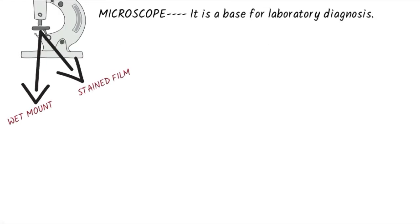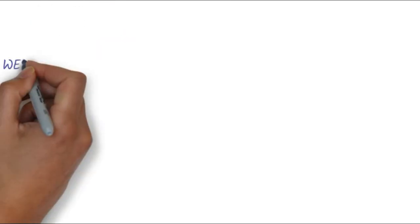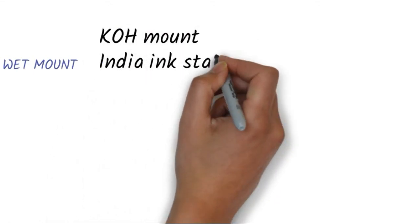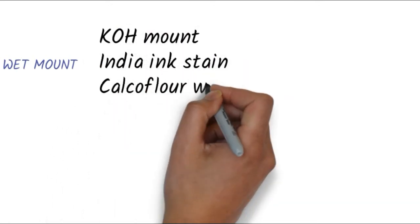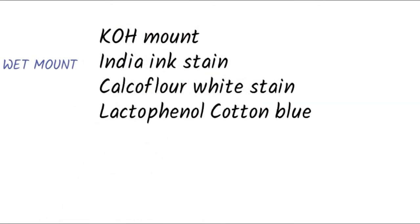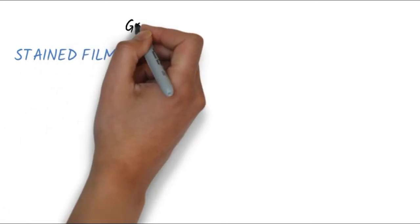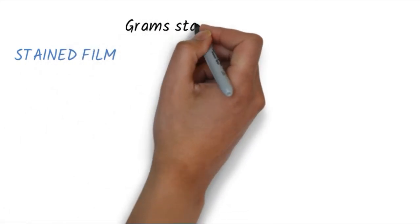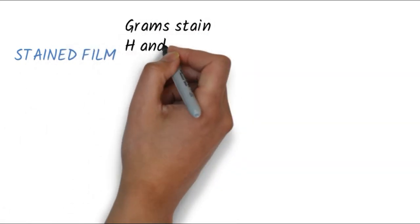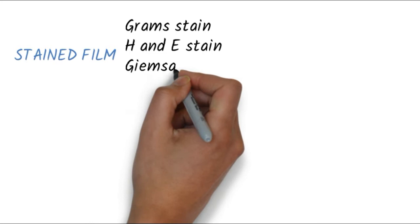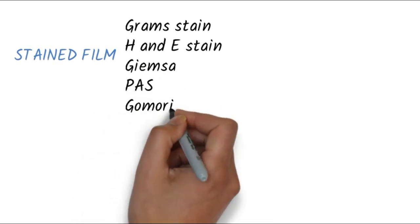Wet mount includes KOH mount, India ink stain, calcofluor white stain, and lactophenol cotton blue. Under stain film, we have Gram stain, H&E stain, and also Giemsa, PAP, and Gomori methenamine stain, etc.